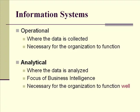Information systems for an organization can be divided into two major categories. Operational — those systems where the data is collected, those systems that the organization needs to function, basic accounting systems, basic inventory systems — and then the analytical systems, which is where we're focusing in this course, where the data is analyzed, the focus of business intelligence. Those systems, while perhaps not necessary for the organization to actually function, are in today's information world necessary for the organization to function well.